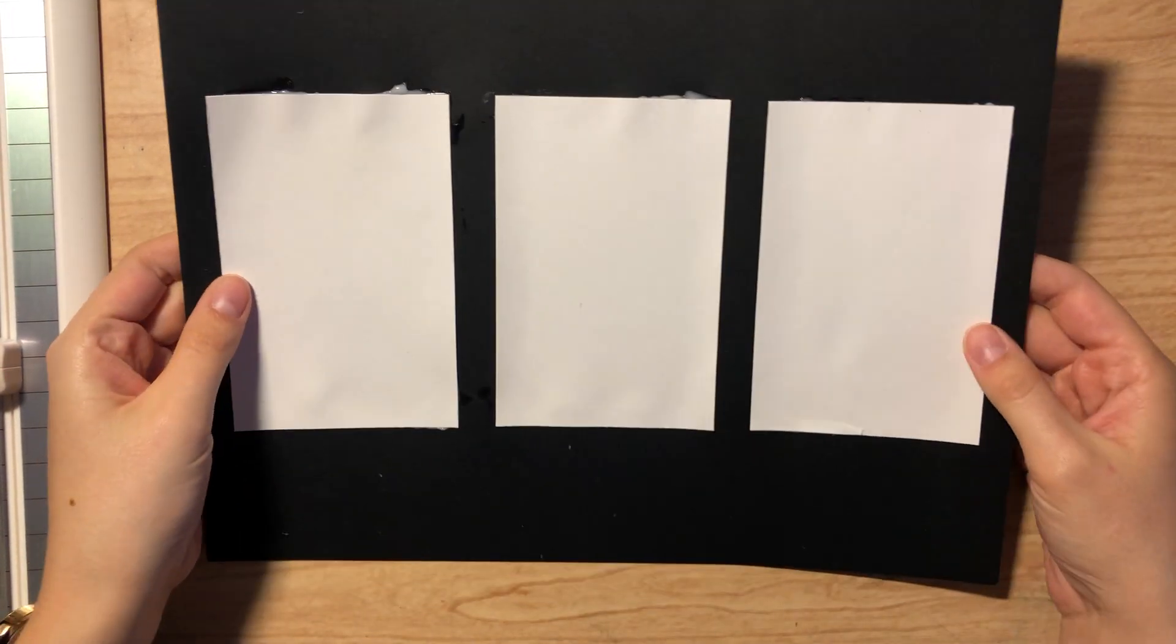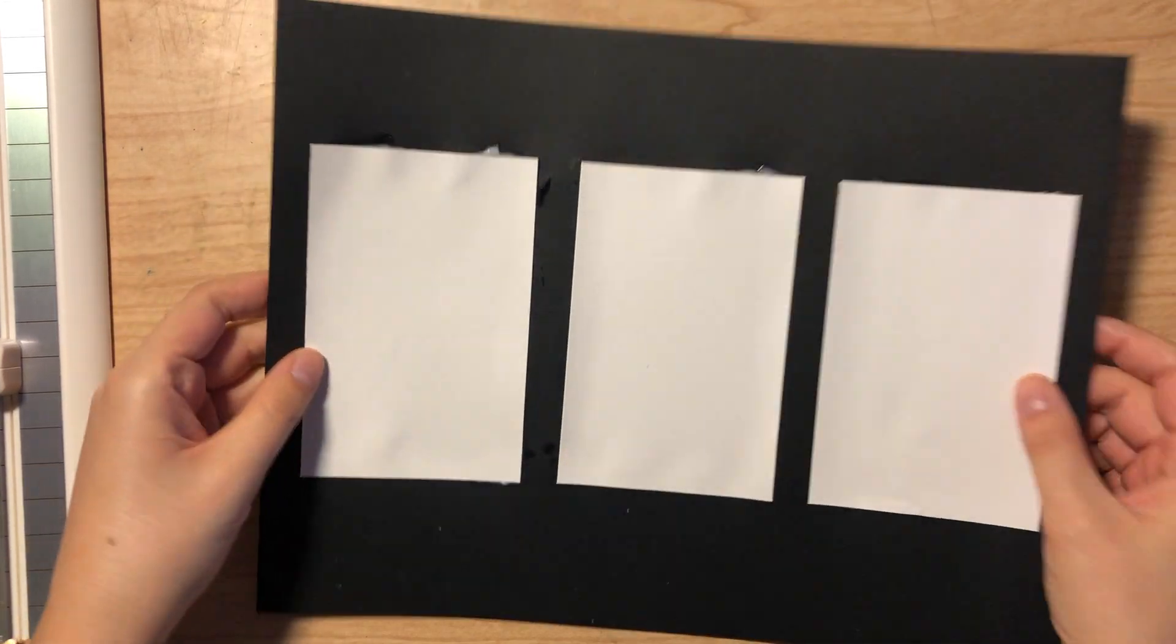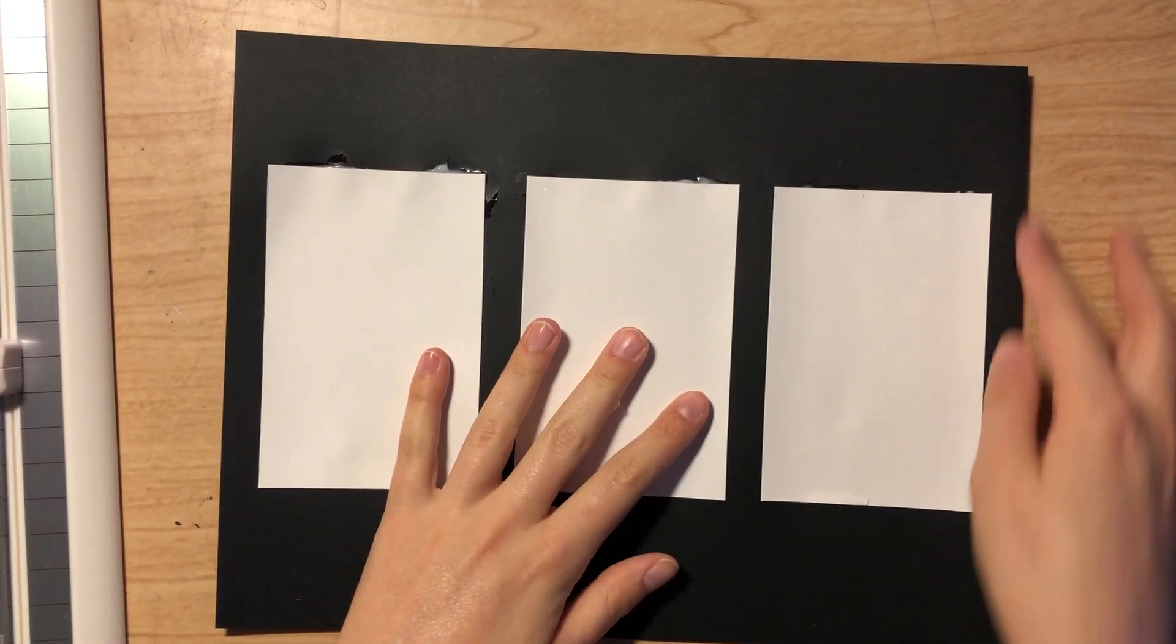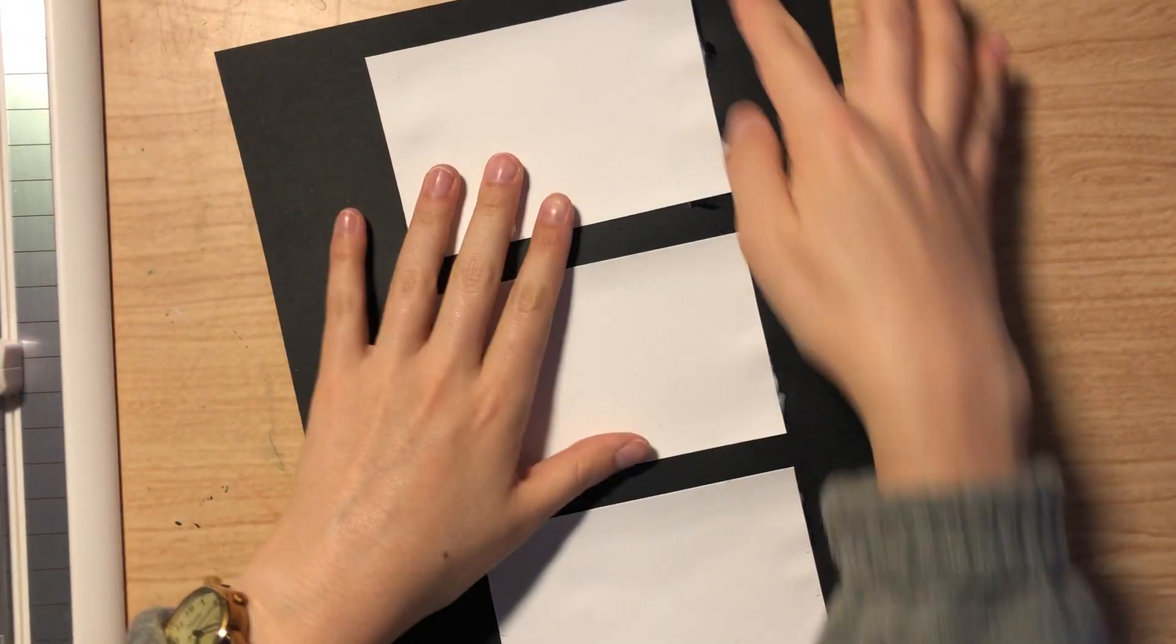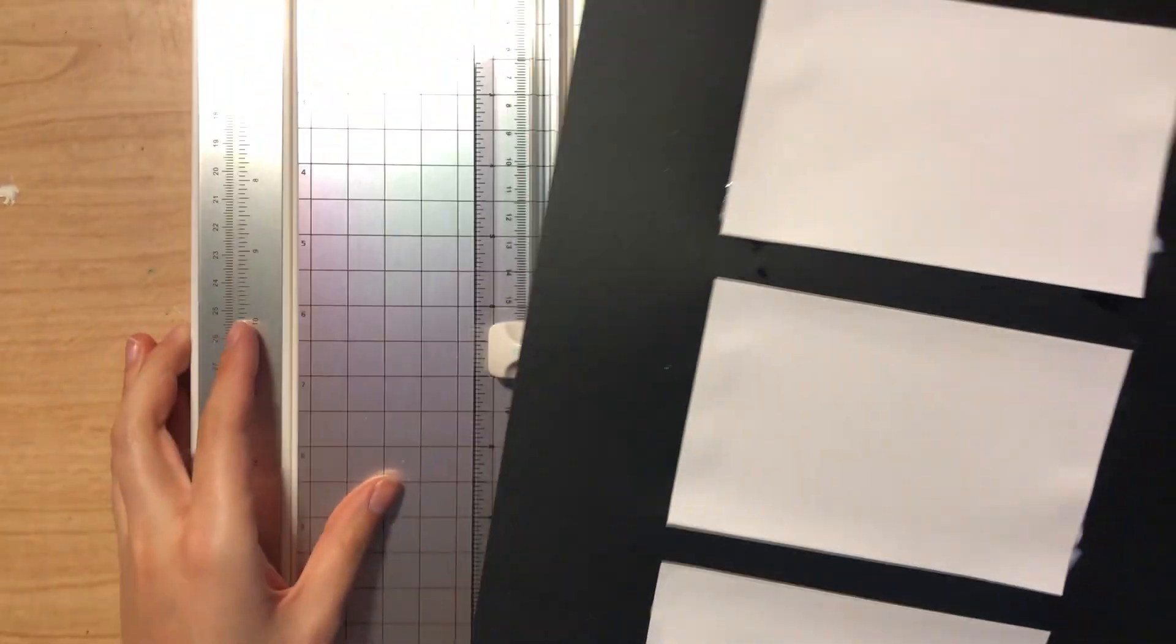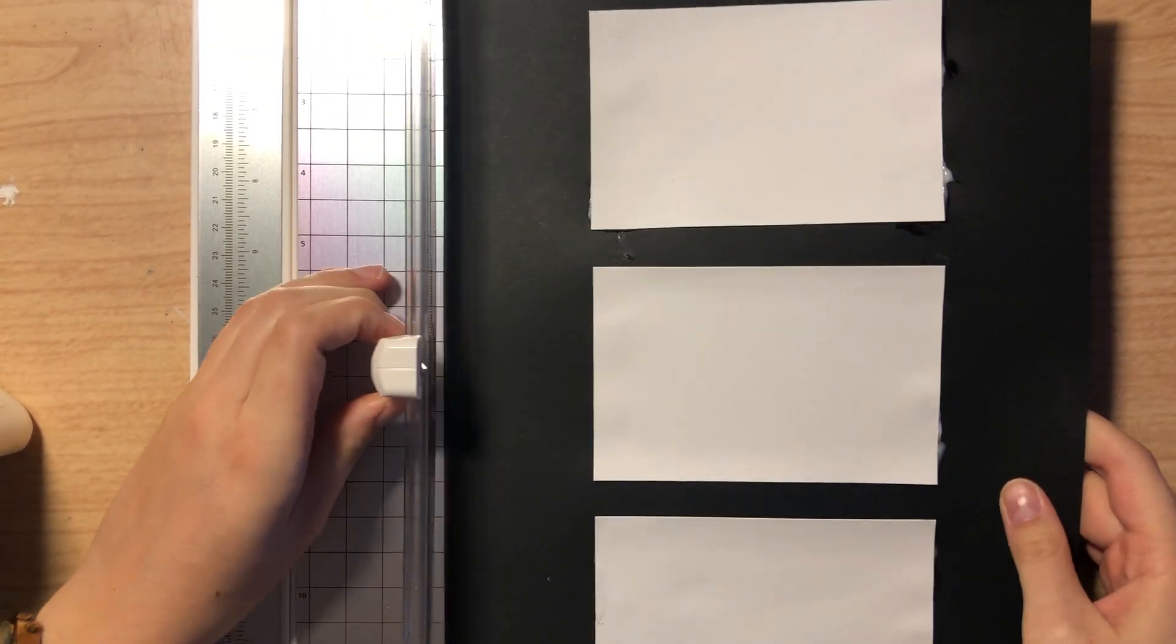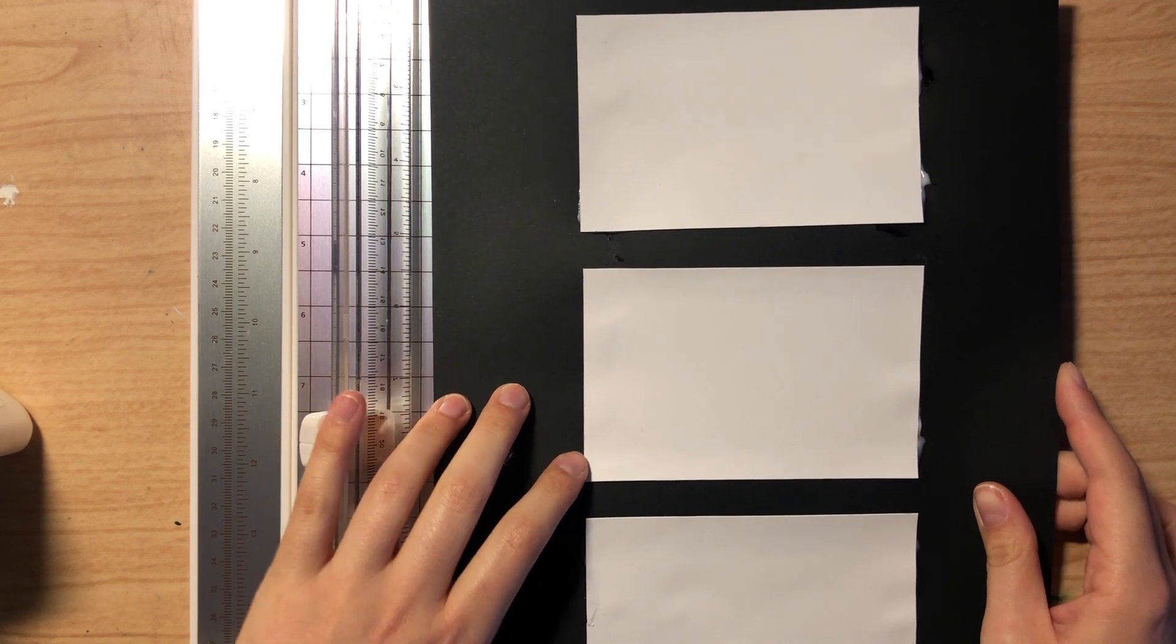So thankfully each side is pretty equal, I got them pretty equally spaced apart. But if you need to cut down one side, that's totally fine. I am going to cut down these two sides here, so I'm going to take my paper cutter and I'm going to use it to cut down the sides, make all the sides equal. So line this up.